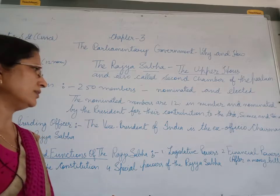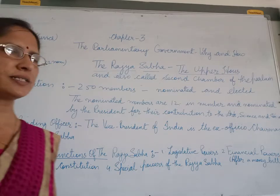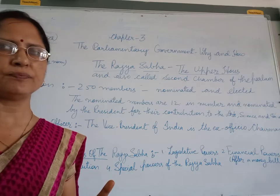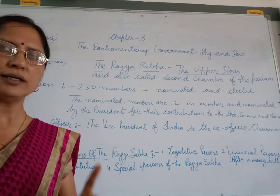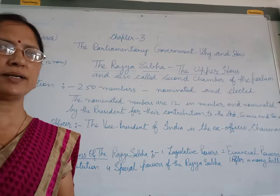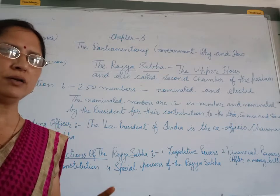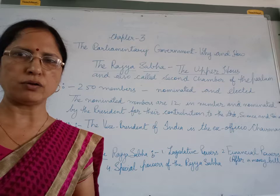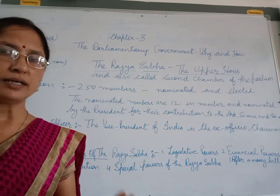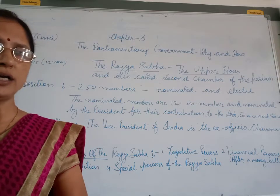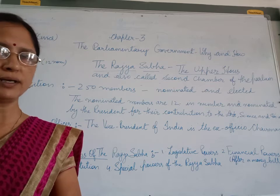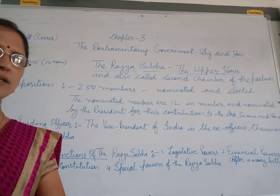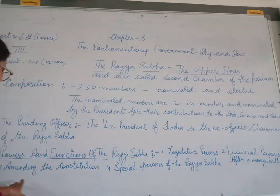Financial power — how much financial power does the Rajya Sabha have? The Rajya Sabha does not make money bills. Who makes money bills? Lok Sabha. Always remember it — money bills are always prepared by the Lok Sabha, not by the Rajya Sabha. Apart from money bills, all other bills are moved forward, discussed, and forwarded by the Rajya Sabha.